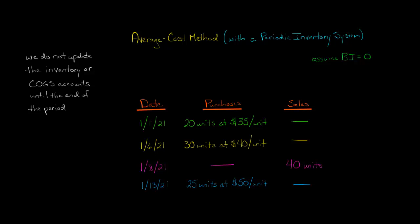In this video, we're going to discuss how to use the weighted average cost method to calculate cost of goods sold or ending inventory when a company uses a periodic inventory system. So we're going to walk through for a sample company a series of transactions, and we'll assume that the beginning inventory balance for this company is zero.